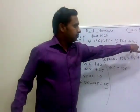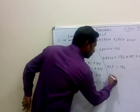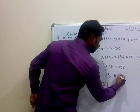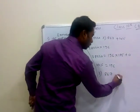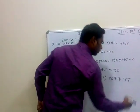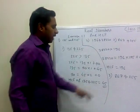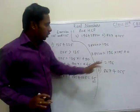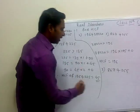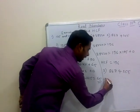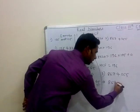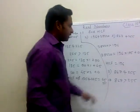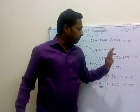Now the third one: 867 and 255. Again we compare both numbers. 867 is greater than 255, so 867 will be our dividend and 255 will be our divisor.